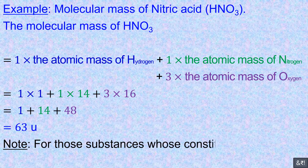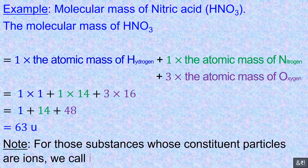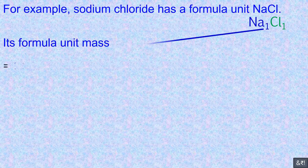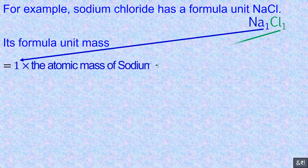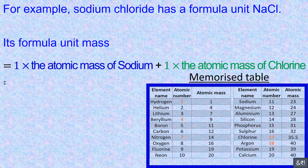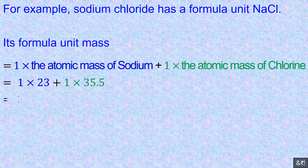Note: for those substances whose constituent particles are ions, we call it formula unit mass. For example, sodium chloride has a formula unit NaCl. Its formula unit mass equals 1 times the atomic mass of sodium plus 1 times the atomic mass of chlorine, equals 1×23 + 1×35.5, equals 23 + 35.5, equals 58.5 U.